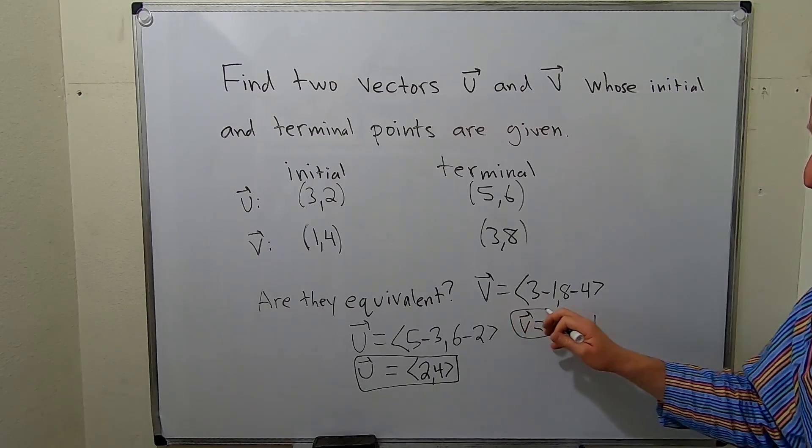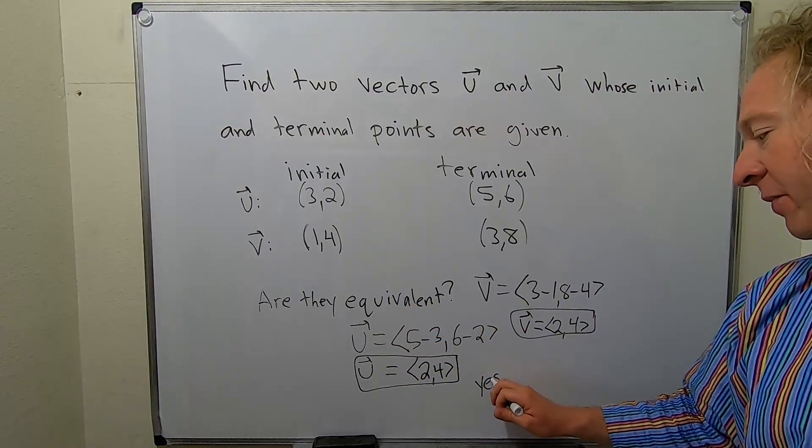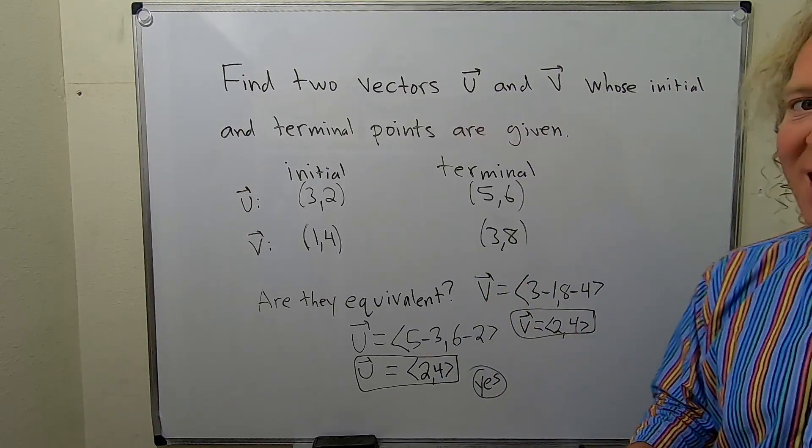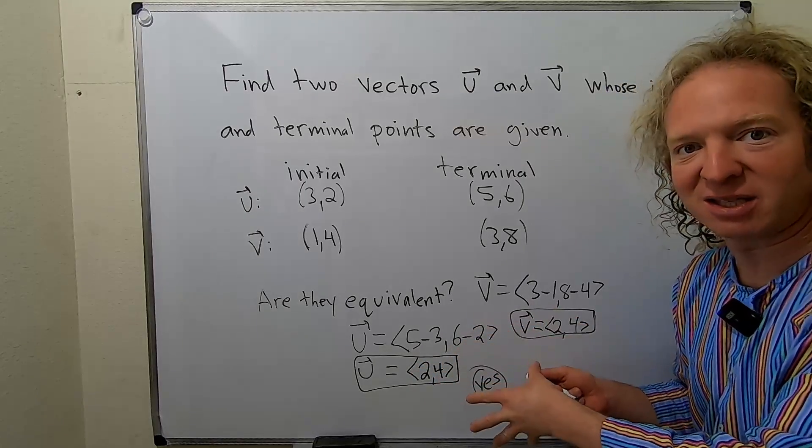Oh, look, they're the same. So the answer is yes, they are equivalent. You might be wondering, what does that mean? What does it mean to be equivalent? So two vectors are equivalent if they have the same direction and length. In other words, when you write them like this, they're going to be exactly the same.